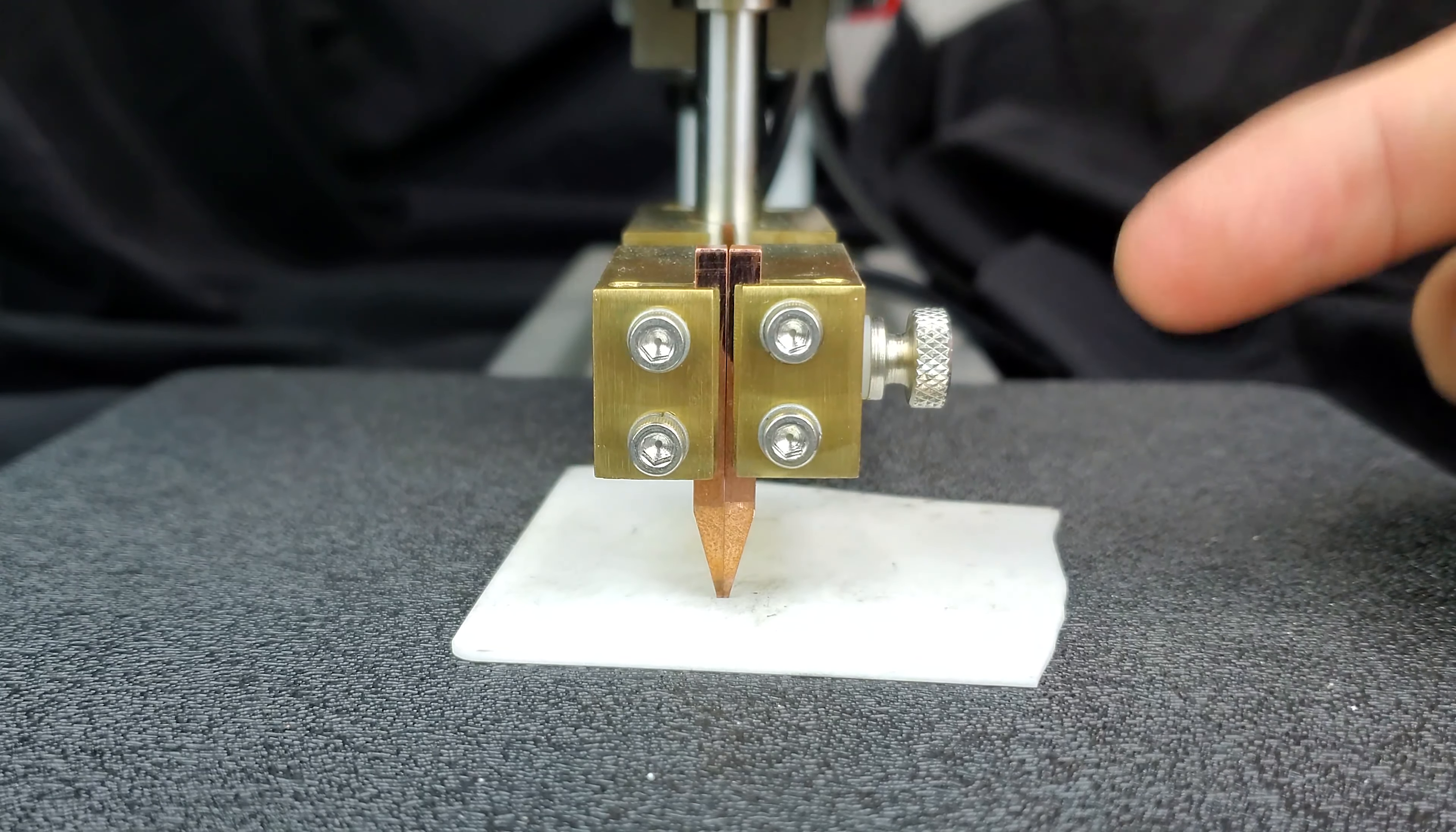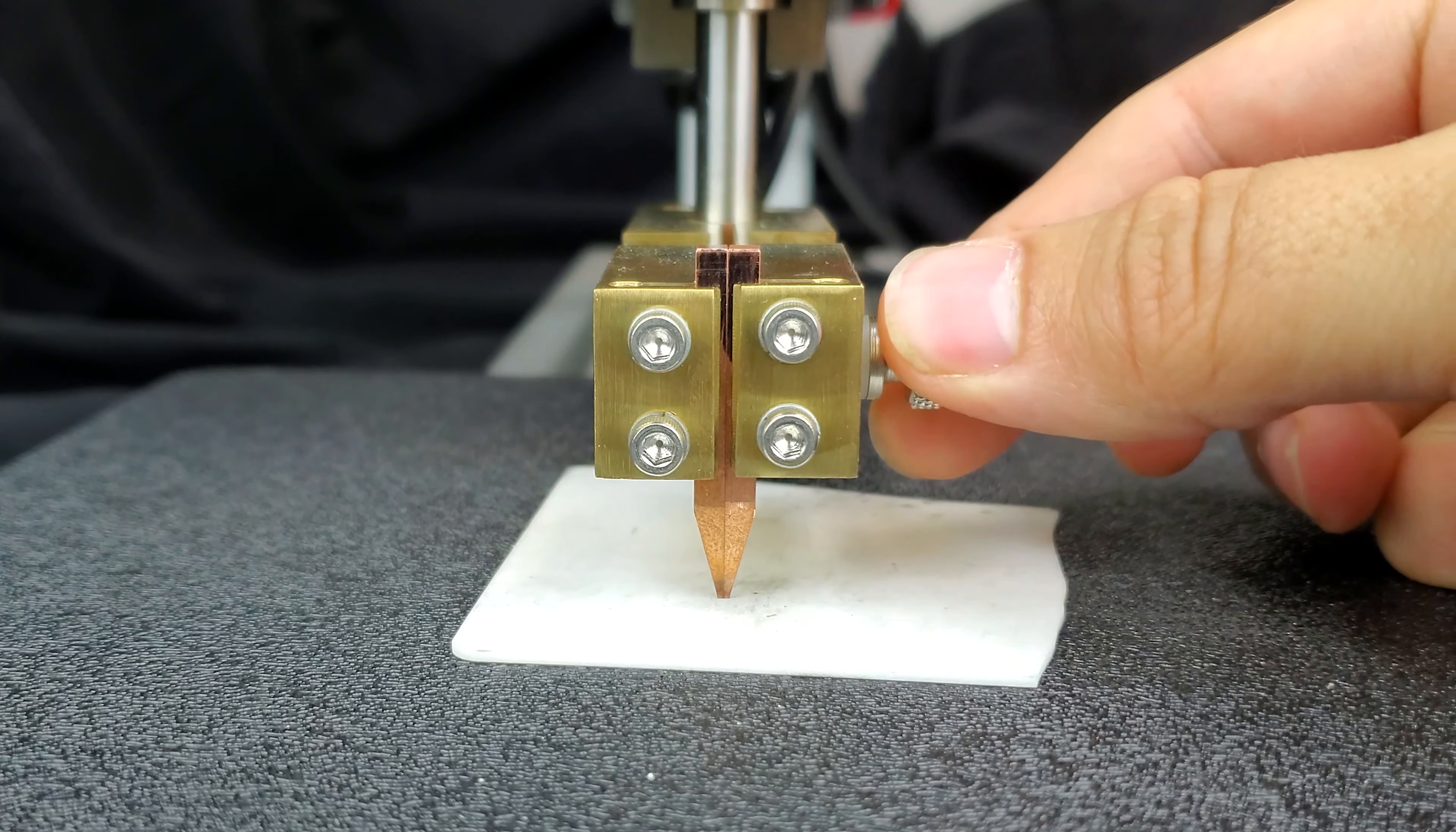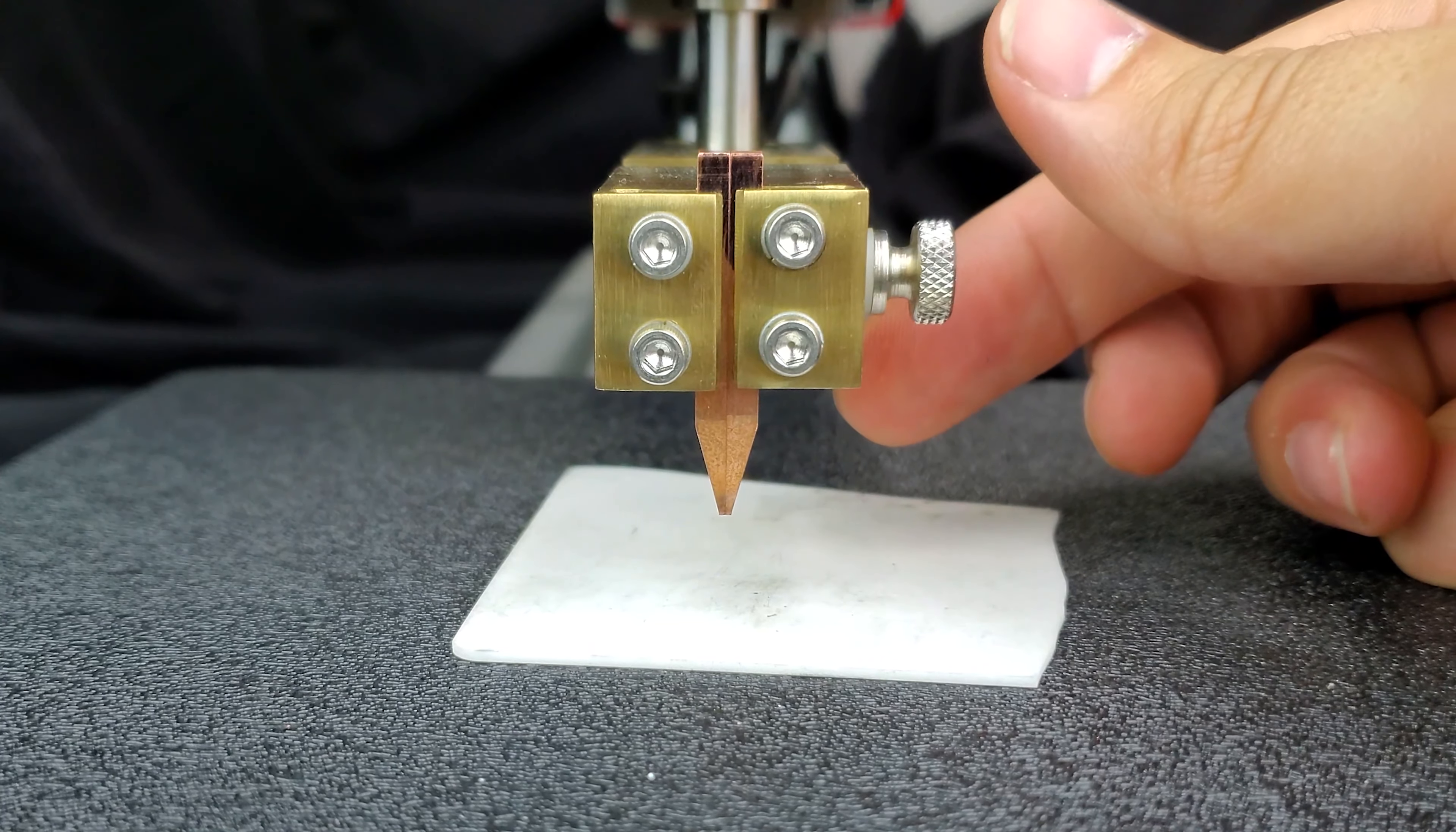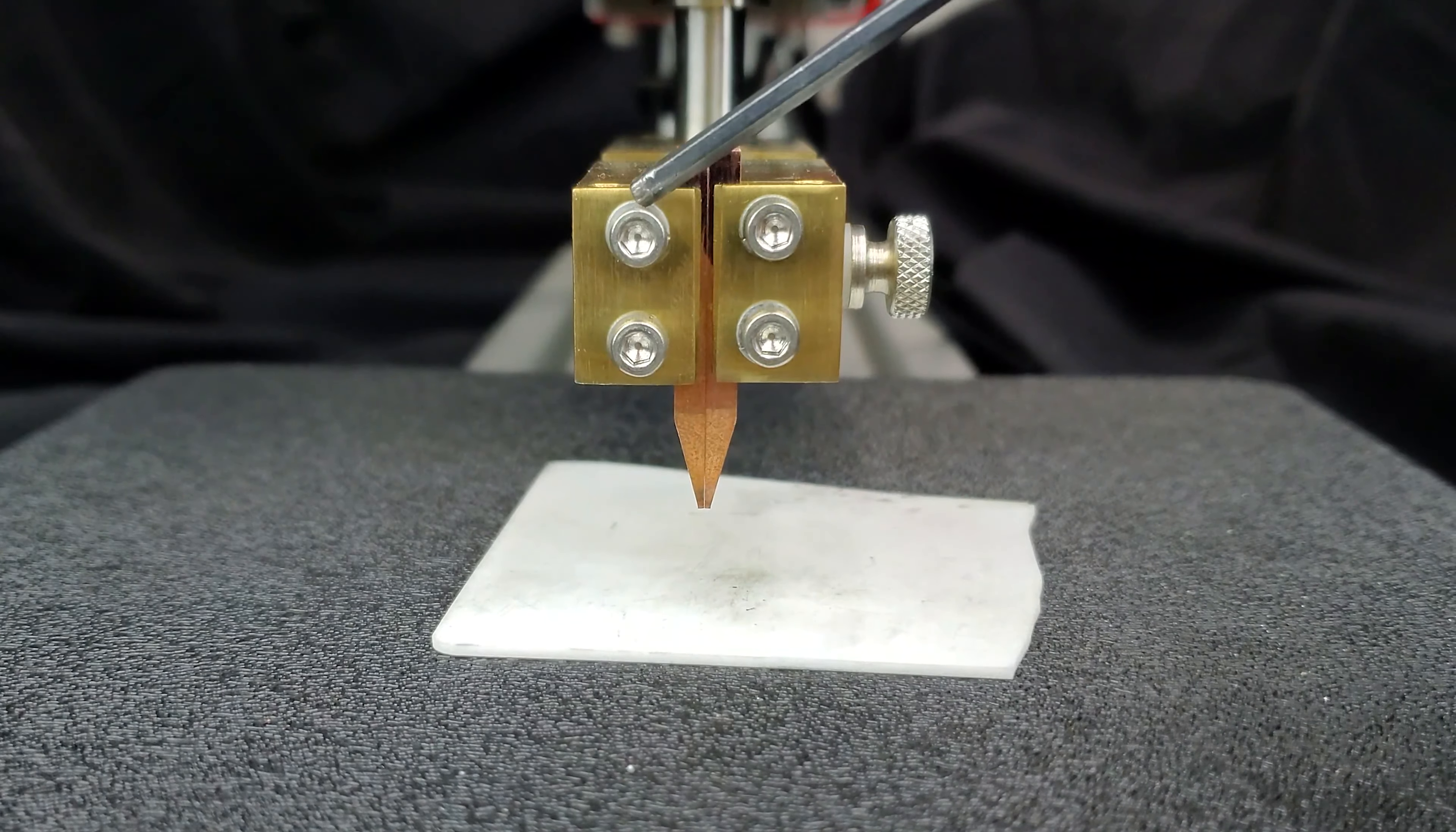We're going to tighten that up. This will push the electrodes together in place. And then we're going to check our working distance to see if it's going to be appropriate for what we're welding.